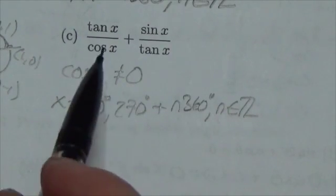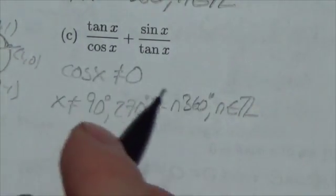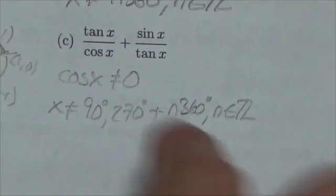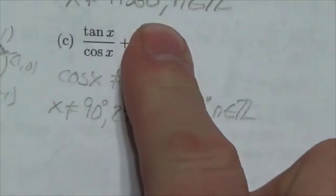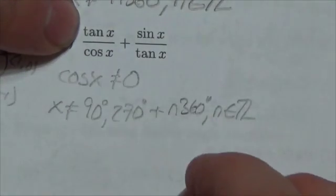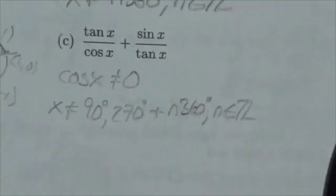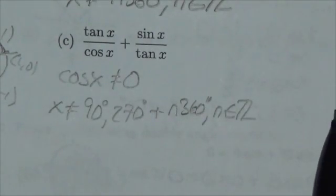We've also got tangent here. A couple things going on. If this tangent wasn't in the denominator, there would still be non-permissibles as a result of tangent, because remember, tangent is sine over cosine. So tangent, all on its own, has a cosine in the denominator.